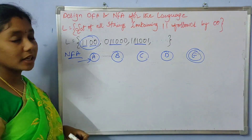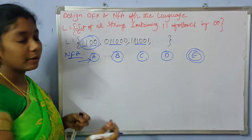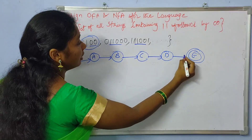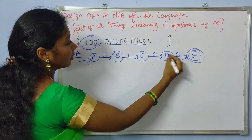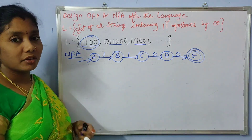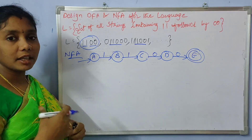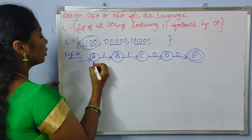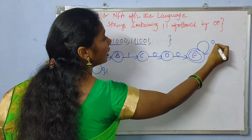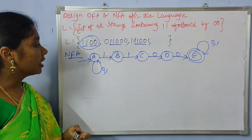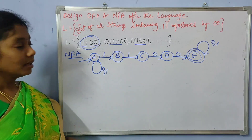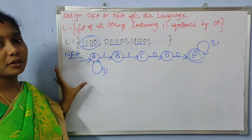The minimal string is double one double zero, and the NFA should accept it. There is no restriction for the beginning and ending of the string — you can have as many zeros and ones both at the beginning and ending of the string. That's why we can have self-loops of zeros and ones for both the initial and final states. So this is the required NFA for the given problem.